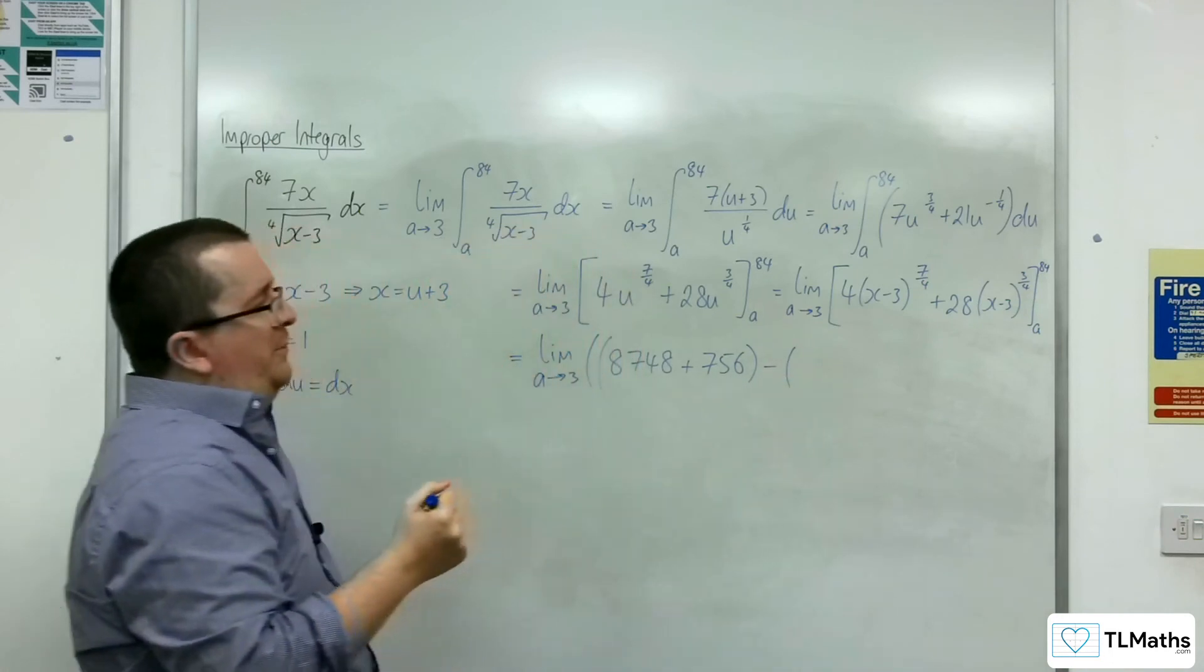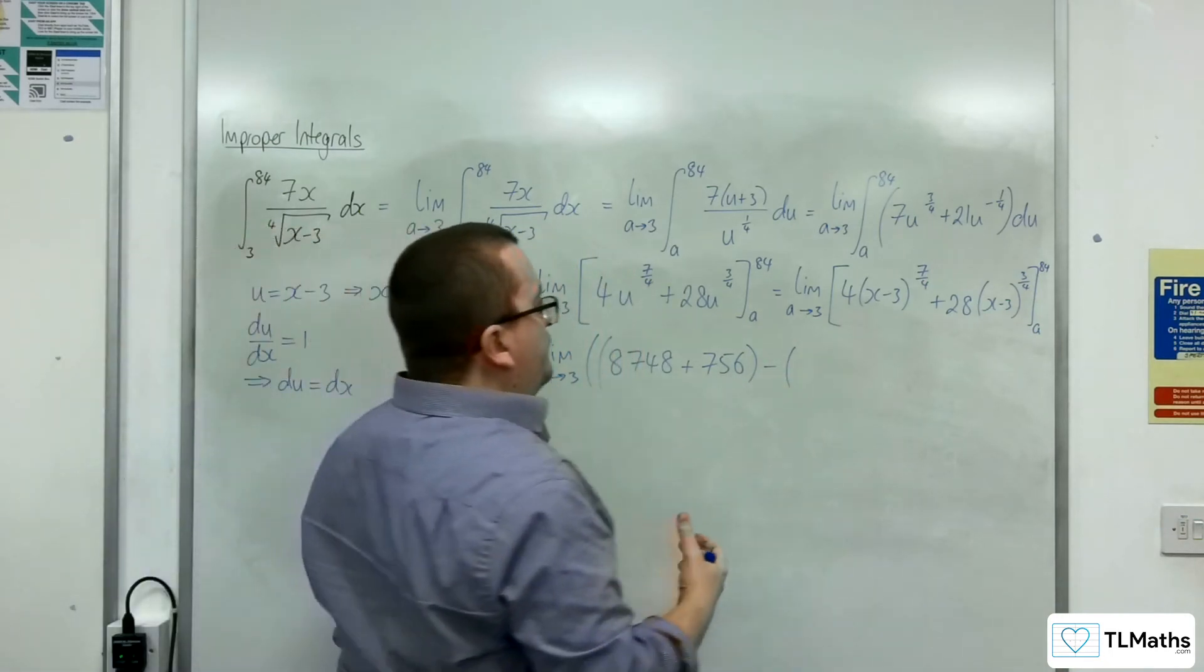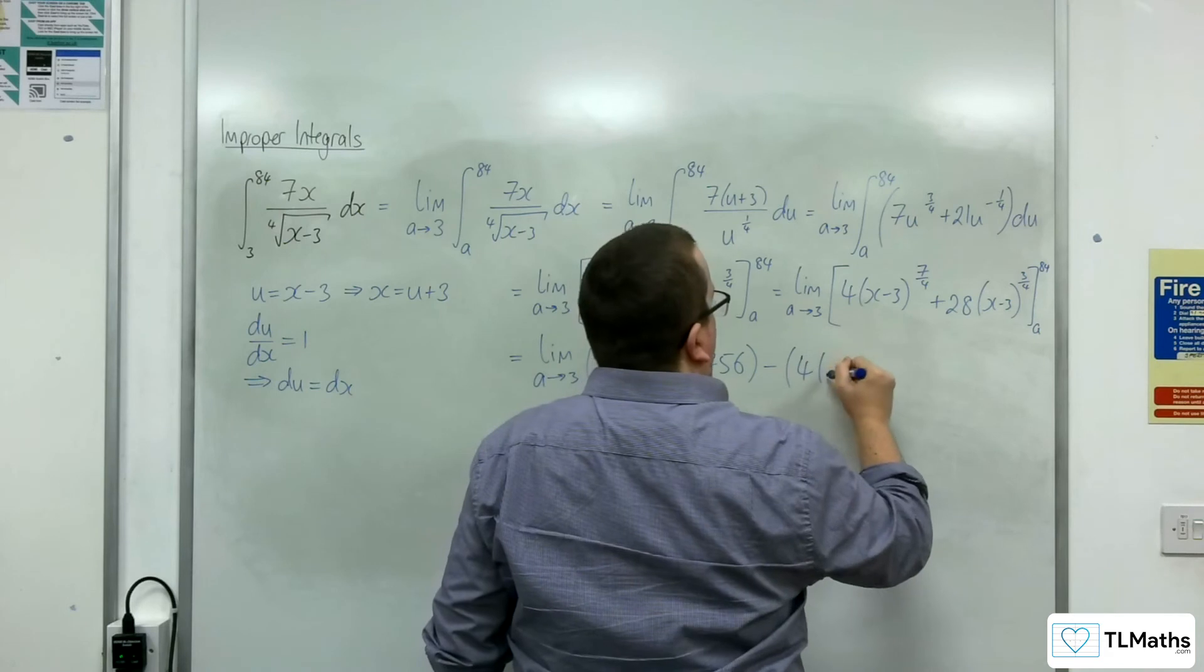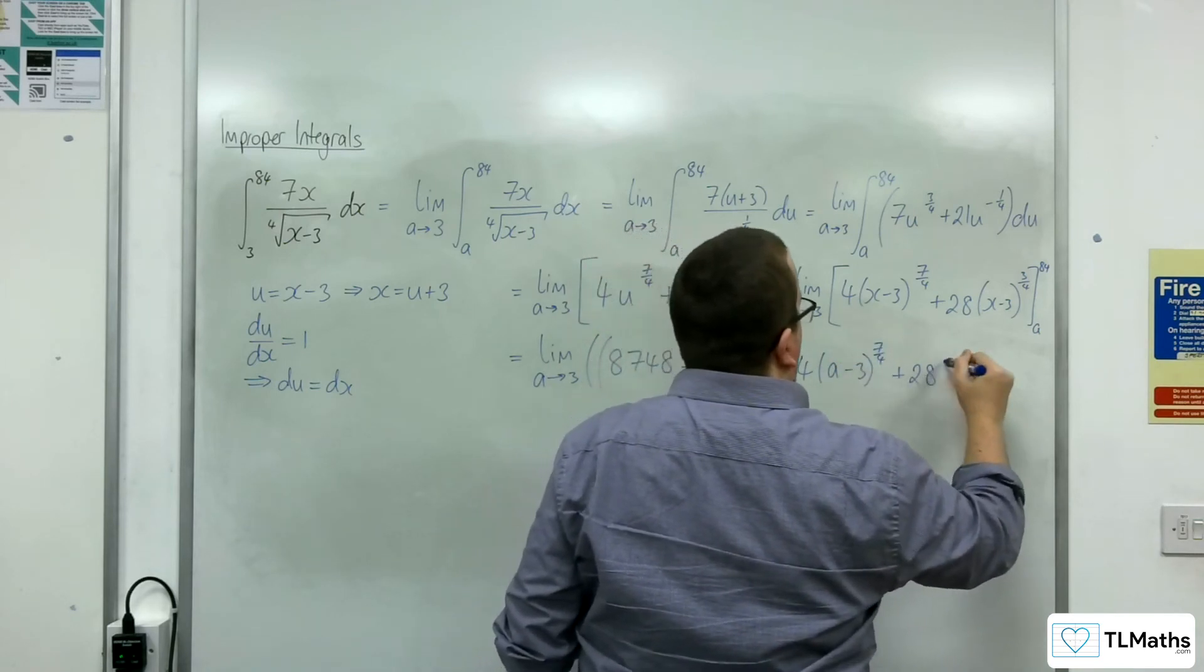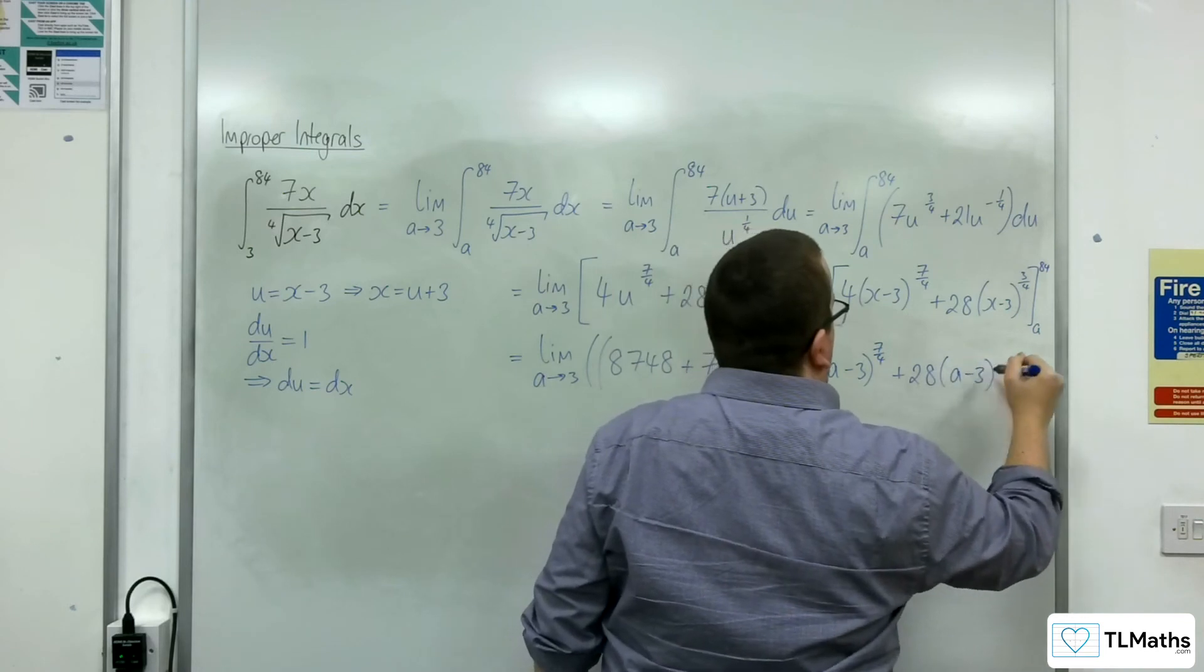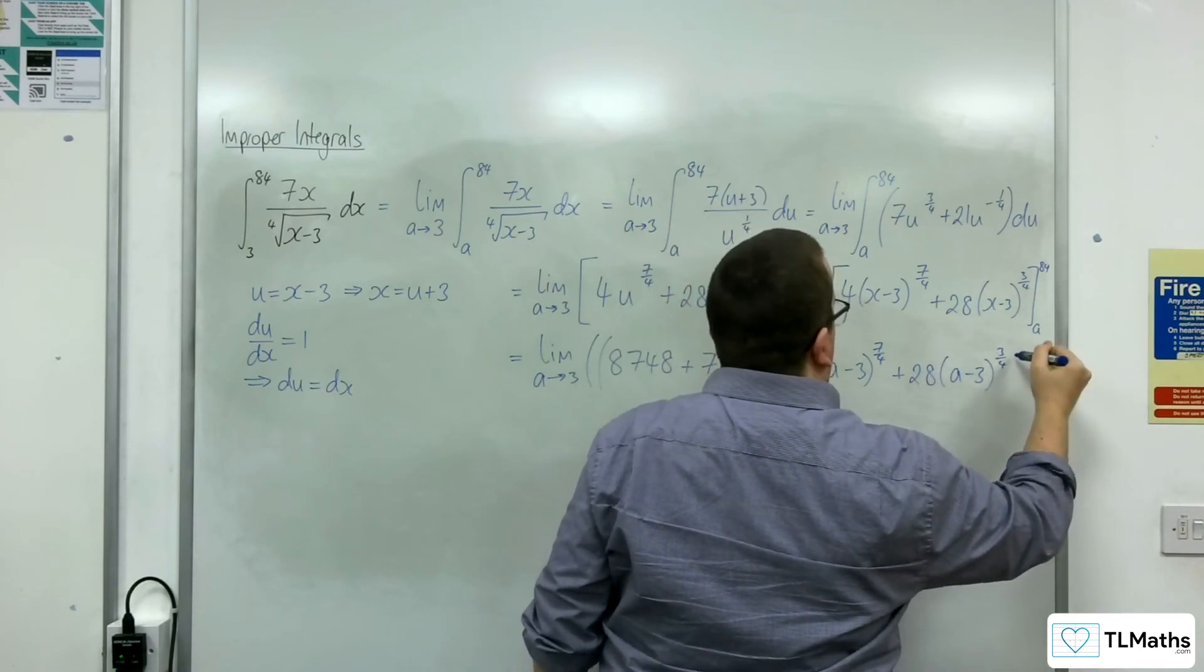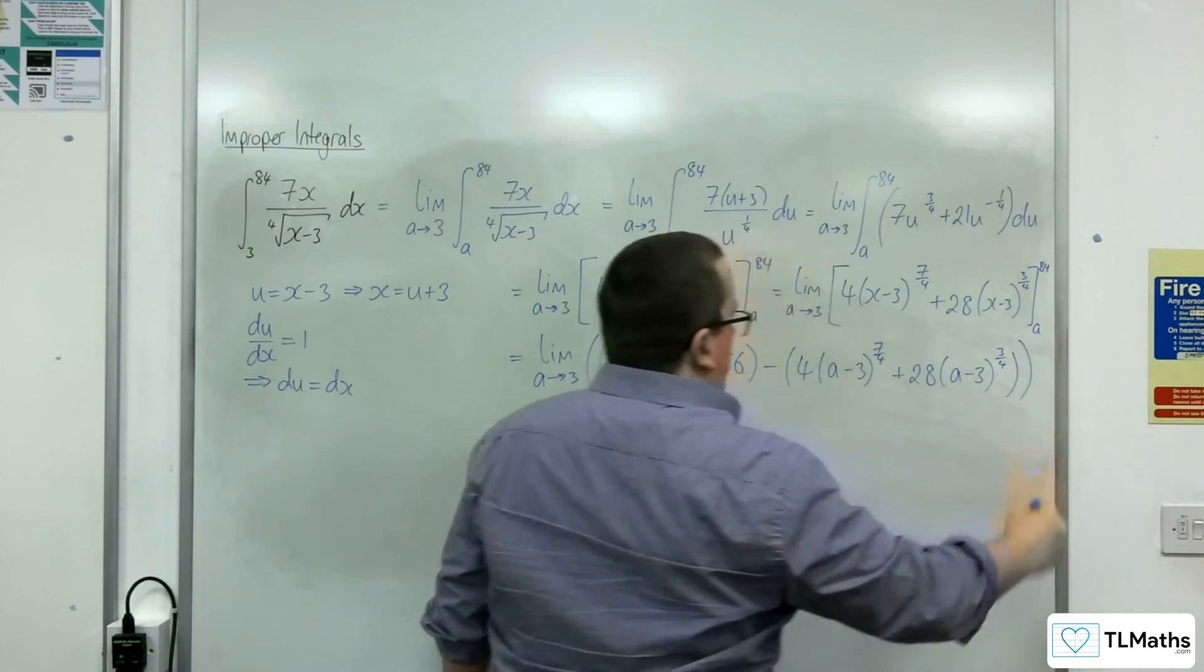Now we've got a substitute in the a, which is 4 lots of a take away 3 to the 7 quarters plus 28 lots of a take away 3 to the 3 quarters, like that.